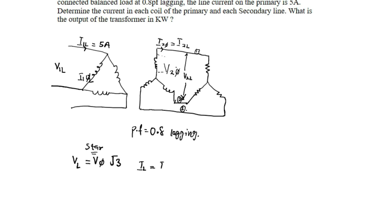And the line current is the same as the phase current. For delta connection, the line voltage is the same as the phase voltage, whereas the line current is √3 multiplied by the phase current.